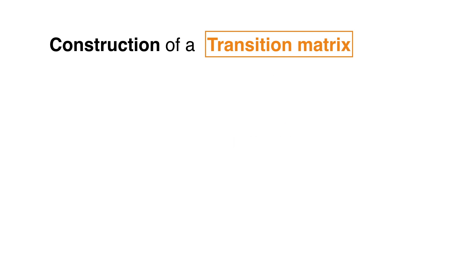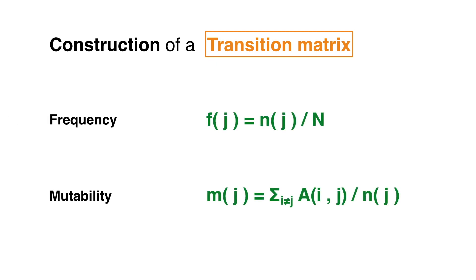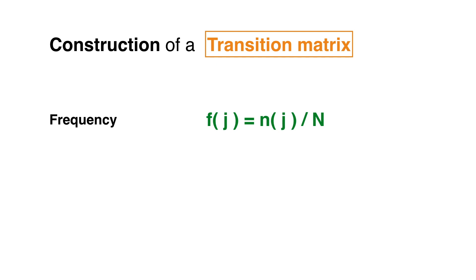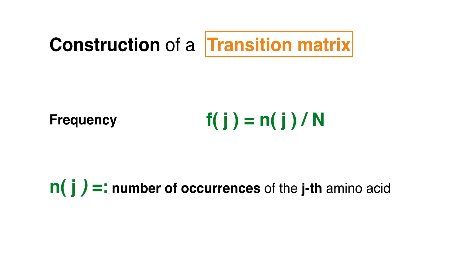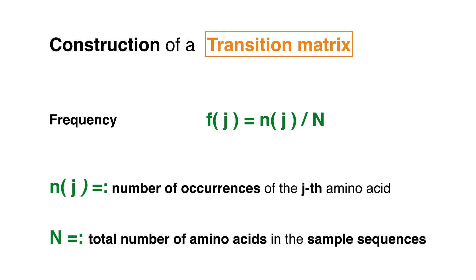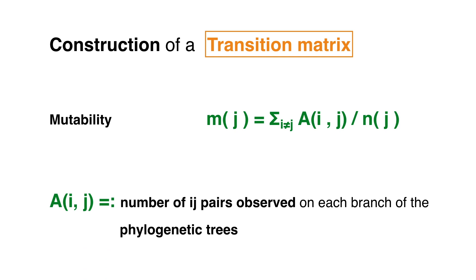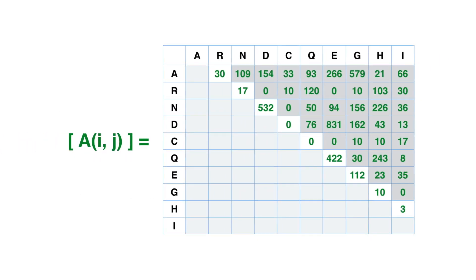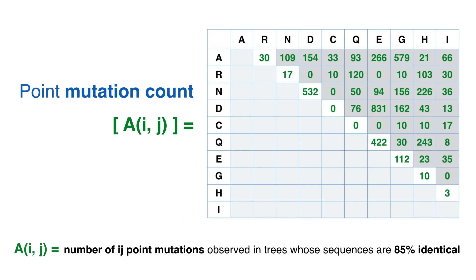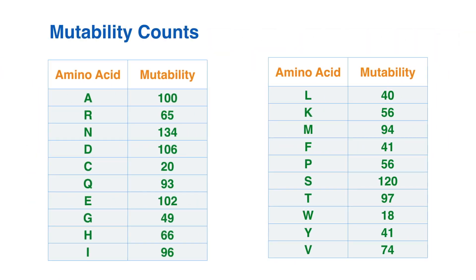M1 is built on the basis of frequency counts and mutability. For each amino acid, the frequency is the ratio of the number of occurrences of that amino acid over the total number of amino acids in the sample. Mutability is the sum of amino acid pairs observed on each branch of the phylogenetic tree over the number of occurrences of the amino acid. Shown here is the upper-left block of the matrix of point mutation counts for sequences within one PAM evolutionary distance, along with the corresponding mutability counts.